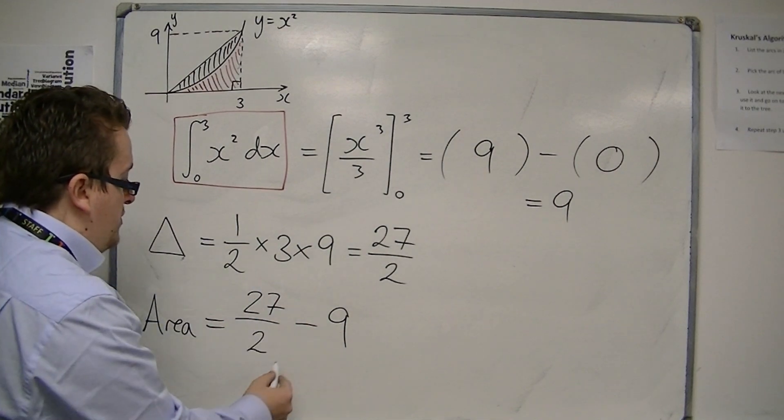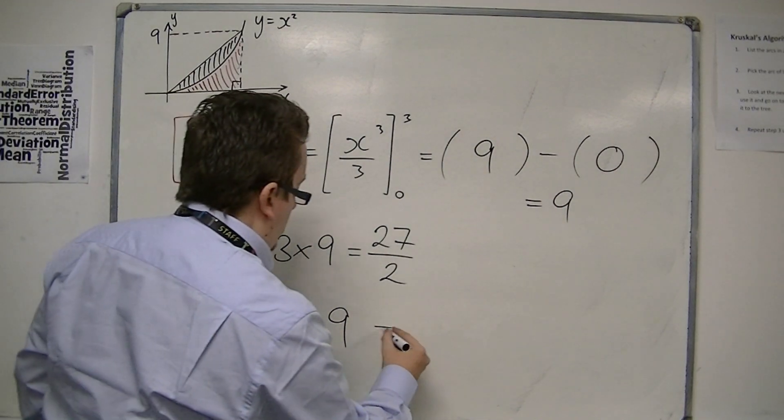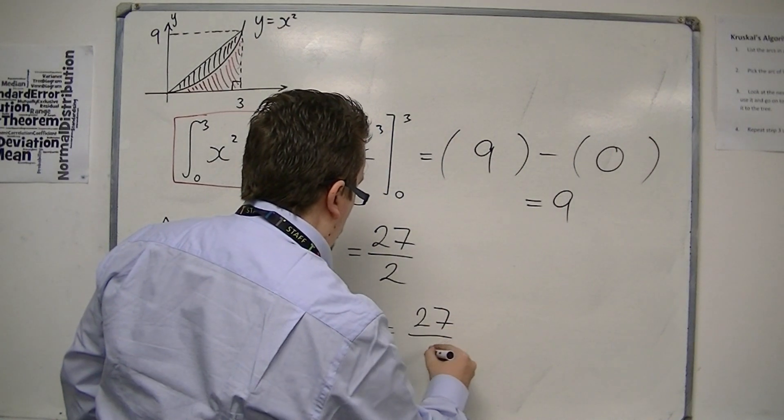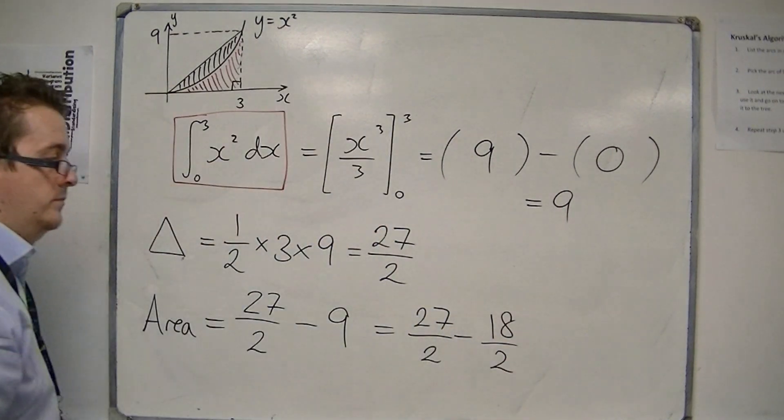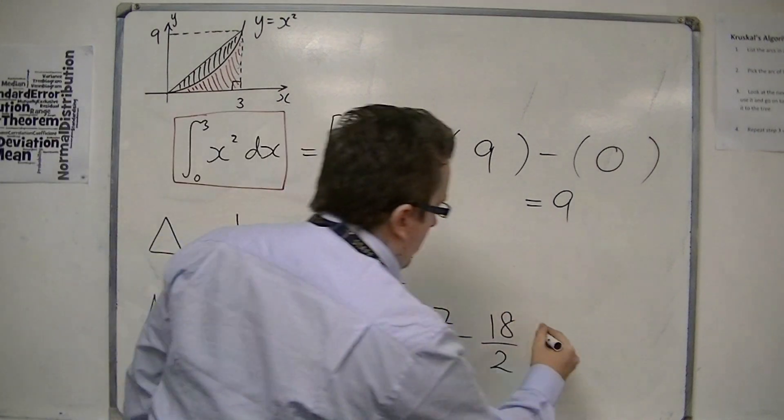So, 27 over 2, take away 9, is 27 over 2, take away 18 over 2, which is 9 over 2.